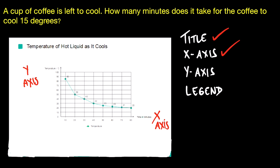So the question is asking you how many minutes does it take for the coffee to cool 15 degrees? If we look at the first point on the graph, that's 65 degrees. And if you look at the second point, that's 50 degrees.